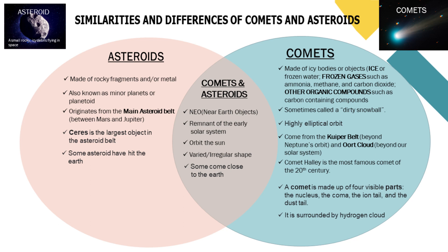Studying the composition of a comet is important in helping scientists understand how earth has liquid water, which in turn made our planet livable. Meanwhile, understanding the composition of an asteroid is important in providing clues for scientists to discover more about the chemical composition of earth and the other planets in the solar system, as well as how life on earth was affected by impacts in the past.